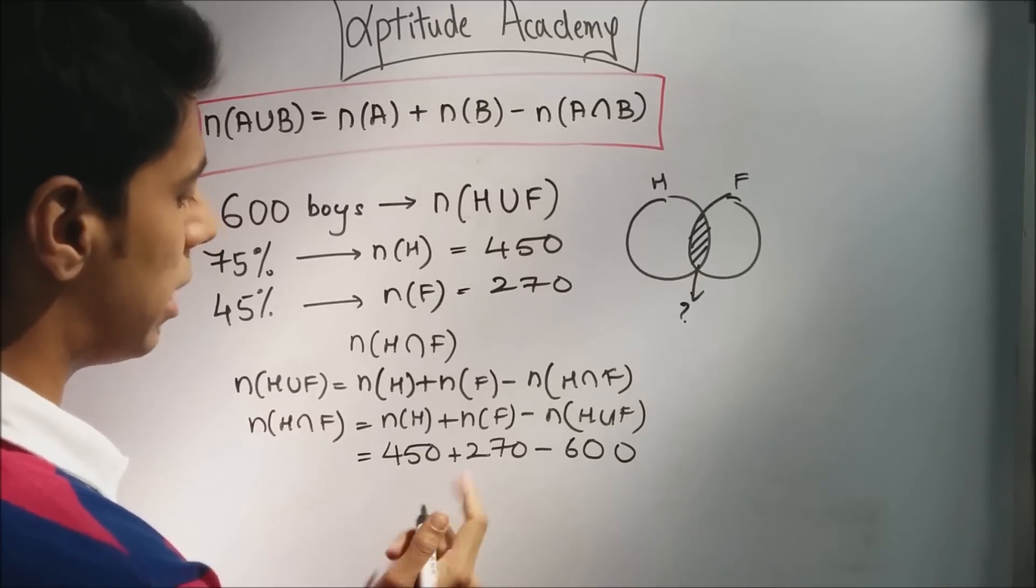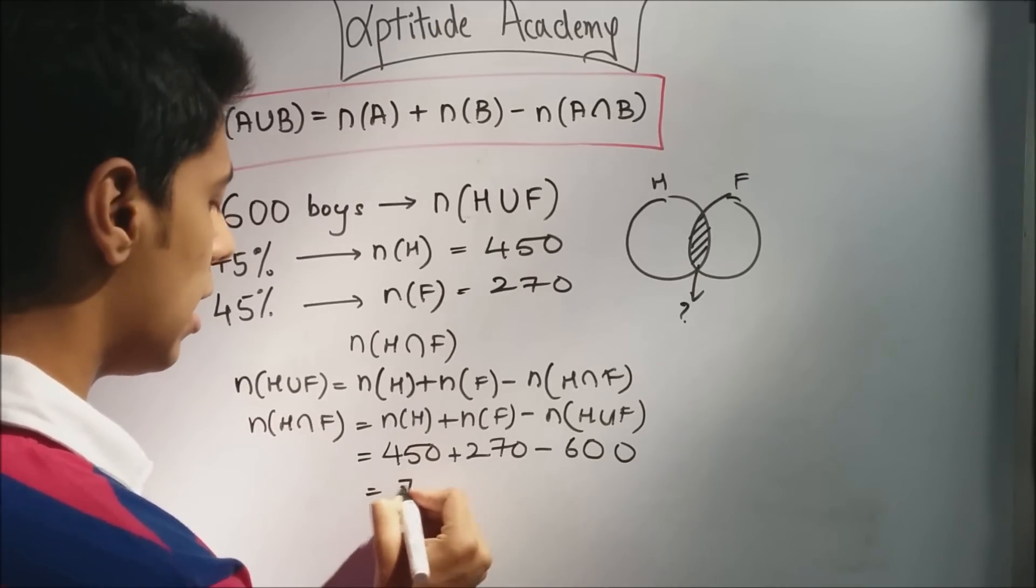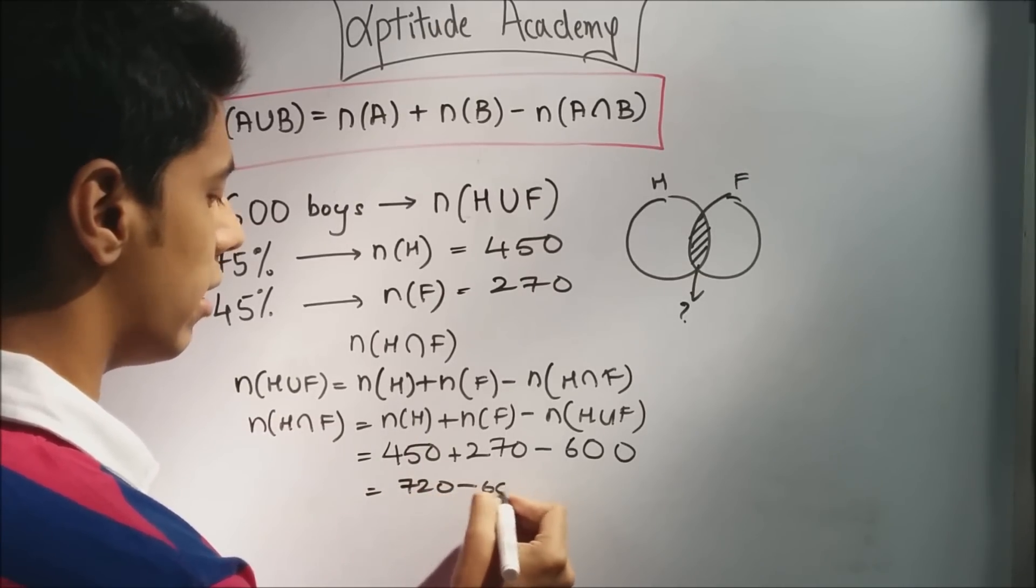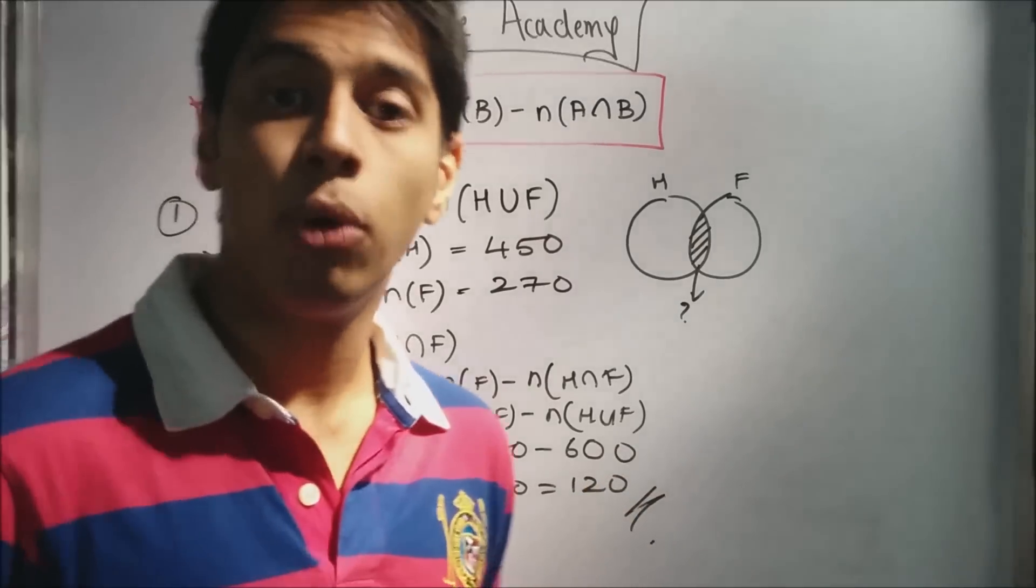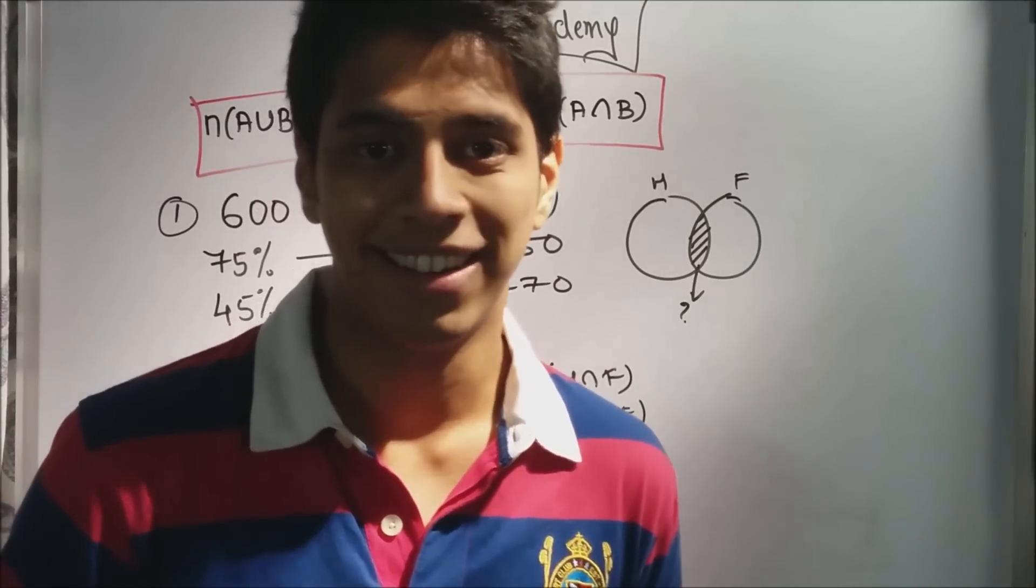Now, 450 plus 270 will give you 720. 720 minus 600, so that is 120. So, 120 boys play both hockey and football.